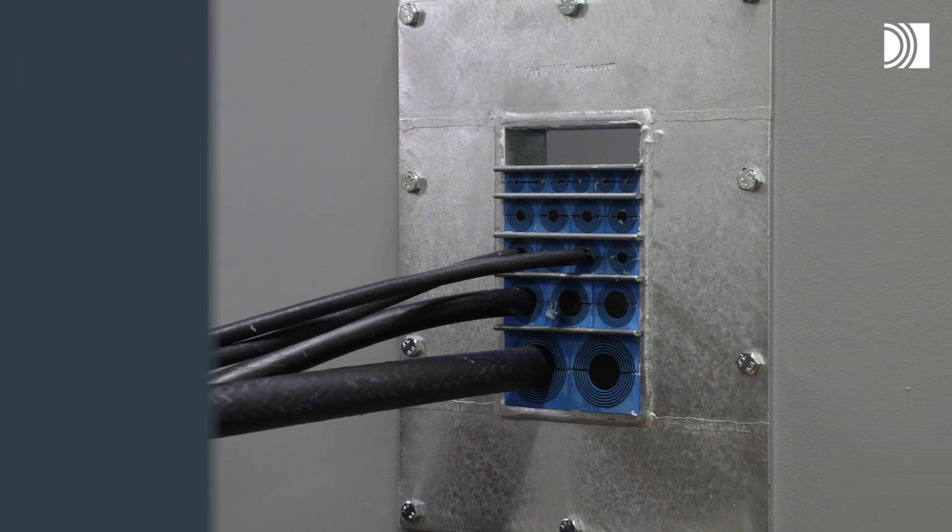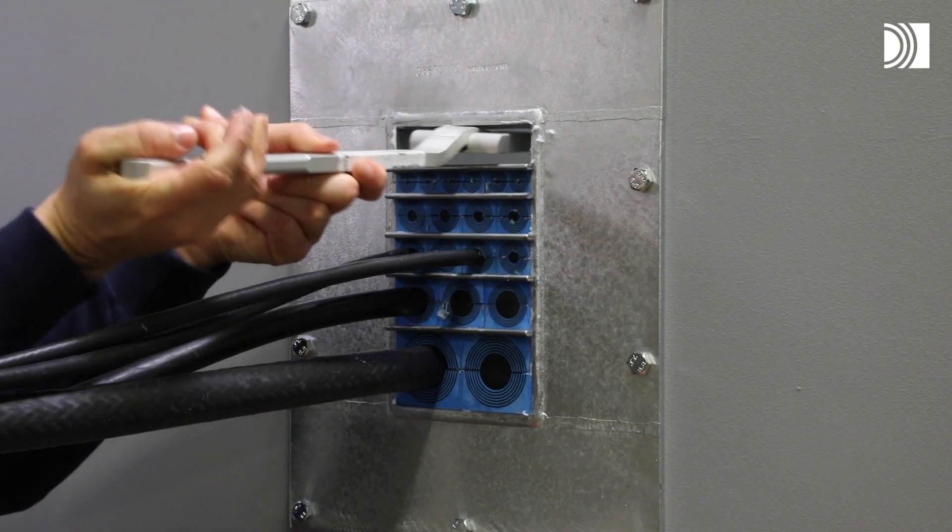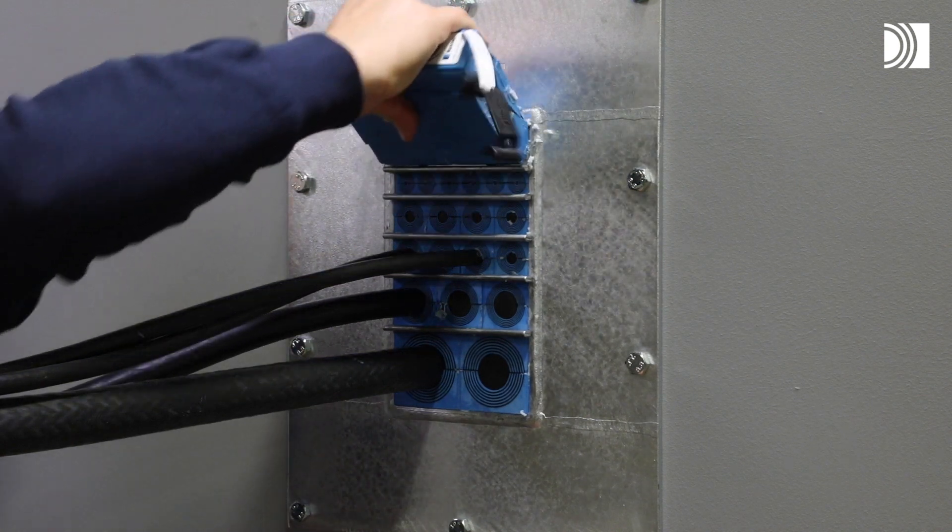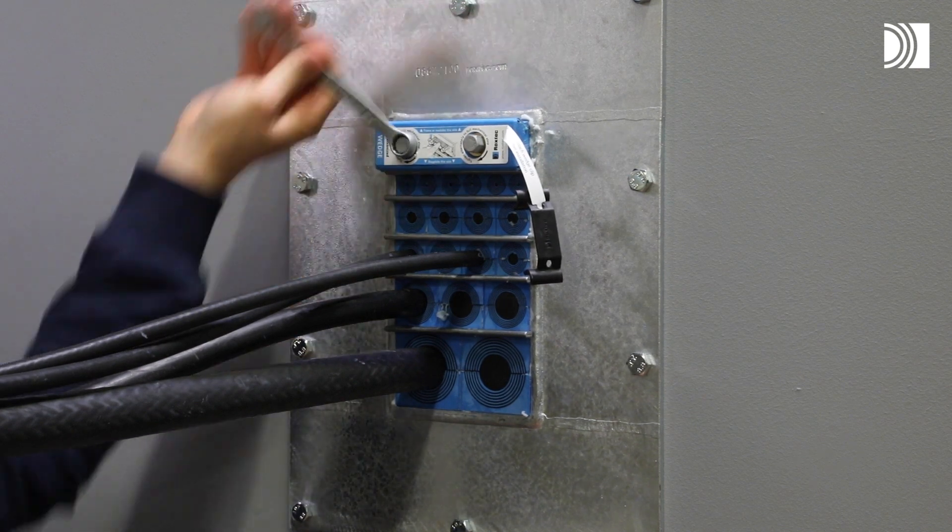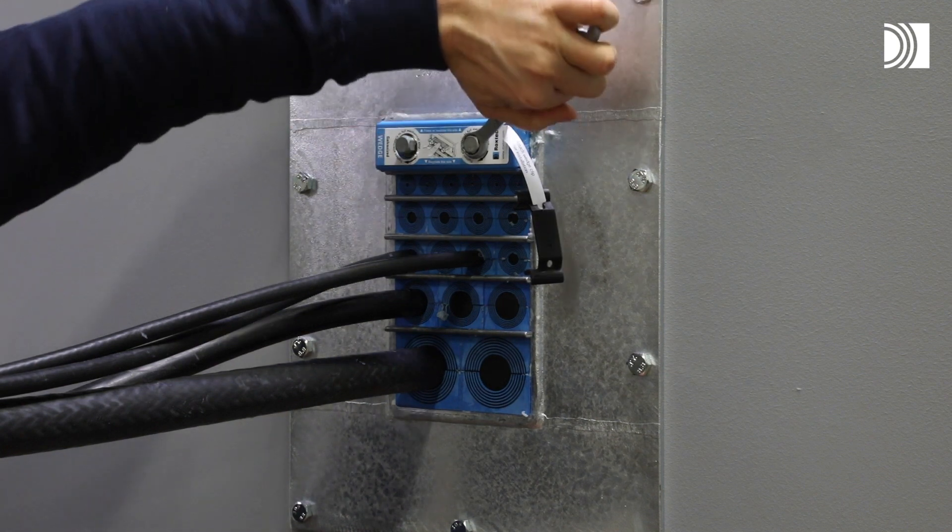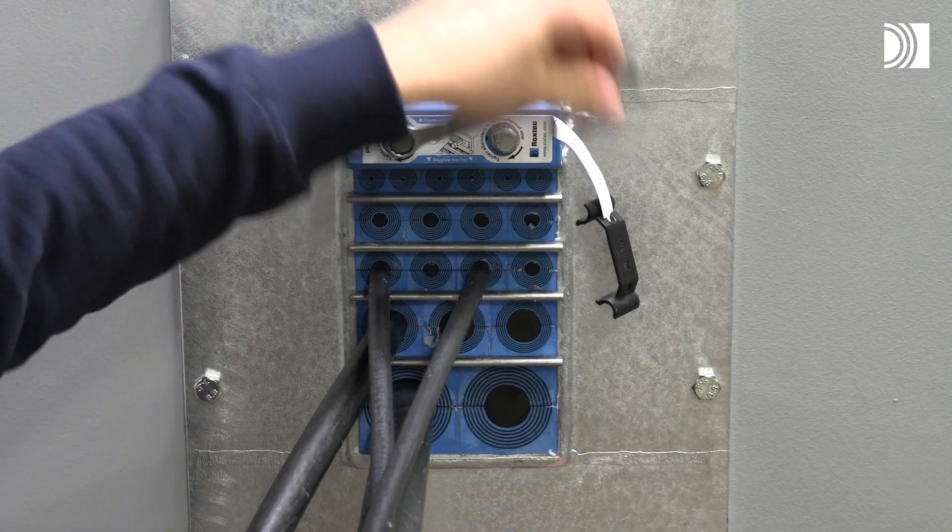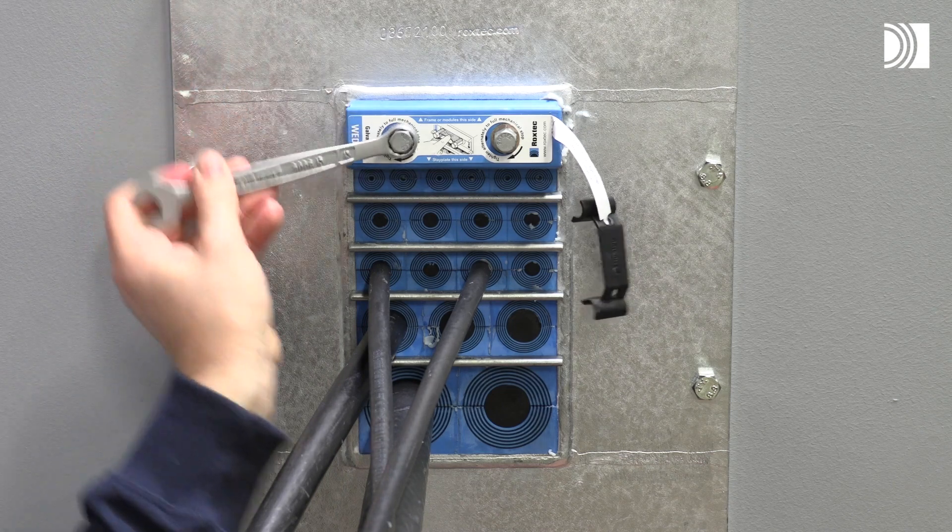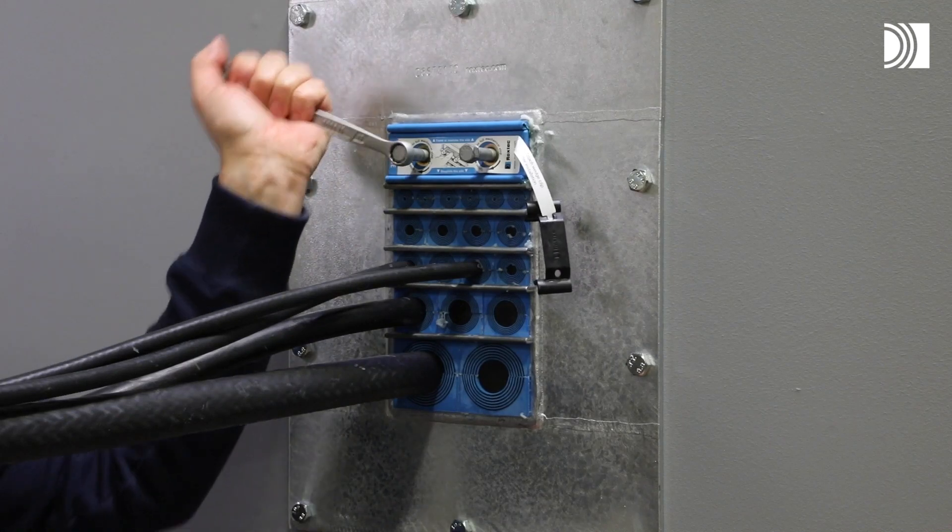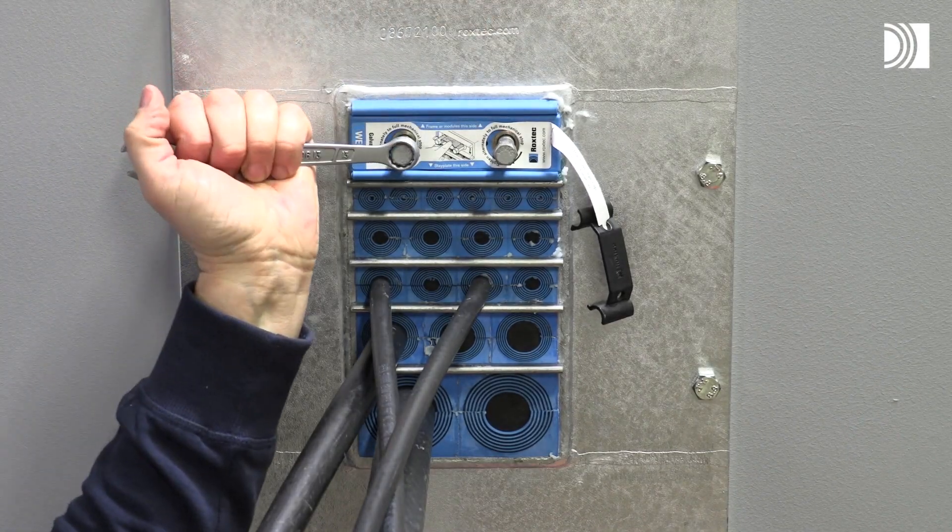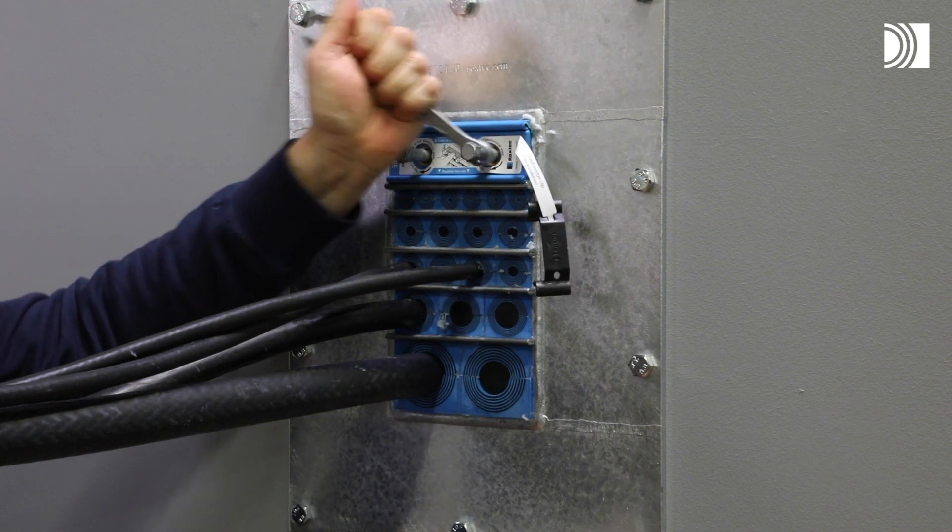Tighten the seal. A Roxtec pre-compression tool can be used to make room for the wedge if necessary. Insert the wedge and make sure it is accommodated and secured by the stayplate. Tighten the screws alternately until full mechanical stop.